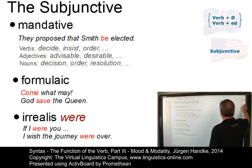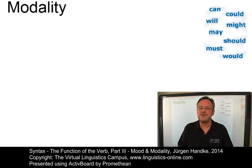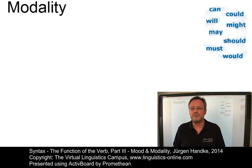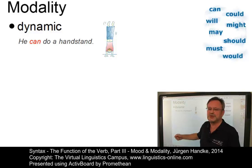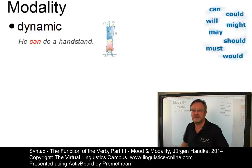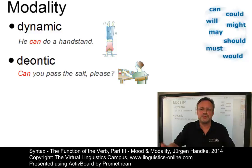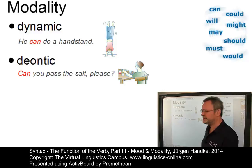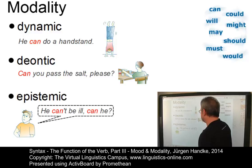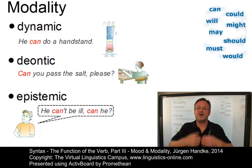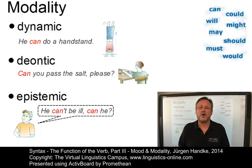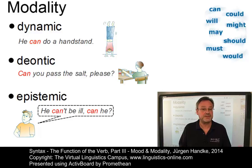Let's now continue with modality. In present-day English, three kinds of modal meaning or modality can be distinguished. Let's illustrate these using the modal auxiliary 'can'. First, the so-called dynamic or factual modality: 'He can do a handstand,' that is, 'he is able to do a handstand.' Second, deontic modality, a mode denoting how things ought to be — 'Can you pass the salt, please?' And third, epistemic modality: 'He can't be ill, can he?' — where a mode of knowing is applied to interpret the modal verb. All three kinds of modality are also commonly expressed by other means than modal auxiliaries.